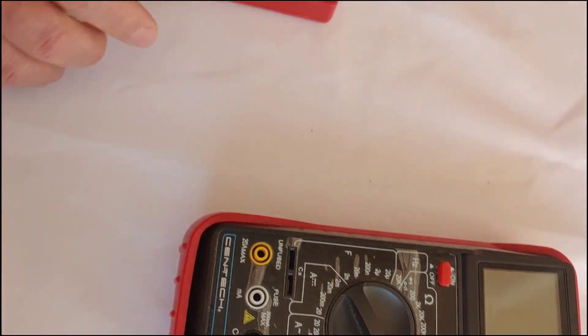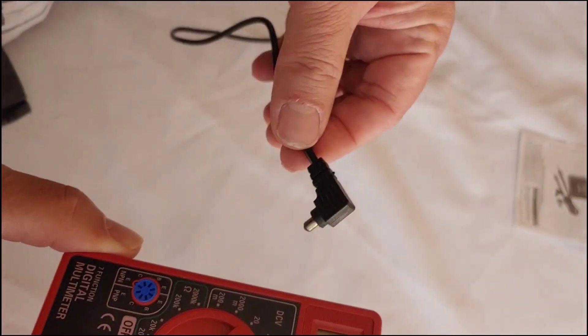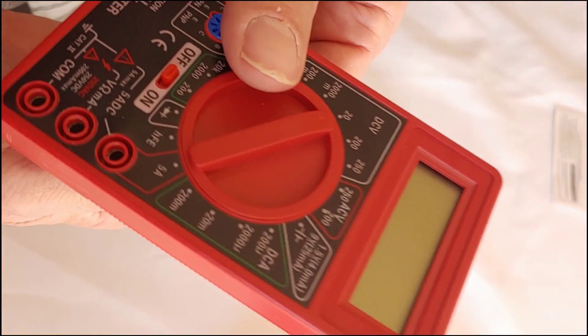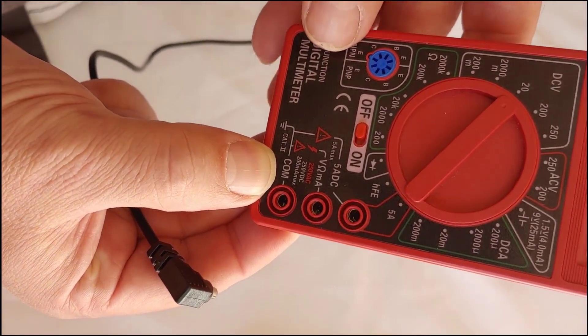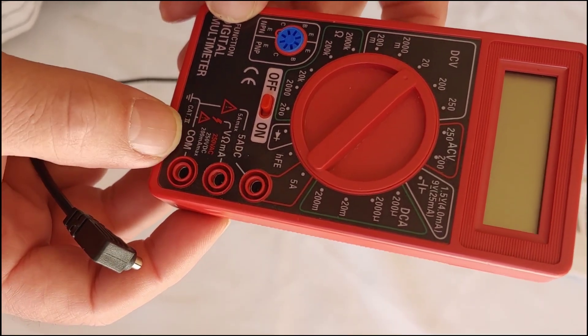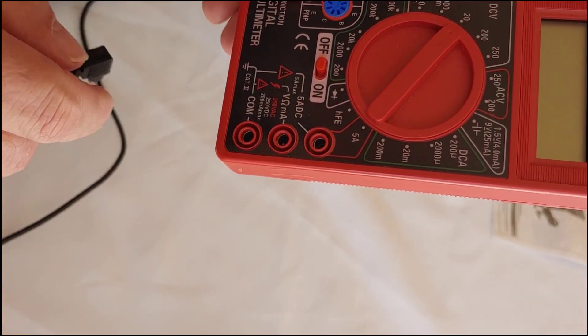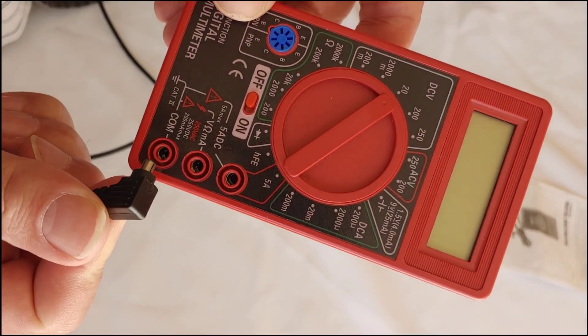The reason I'm pointing this out is because when you do the leads, you take the black negative, and the black negative always goes in the comm. I just have a habit of calling it comms. Comms is where the black goes, always, regardless of what color it may be there. You simply take it and you plug it in.